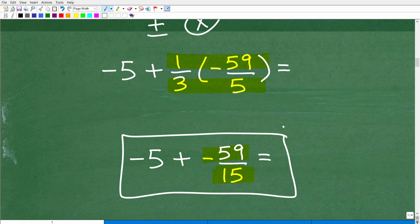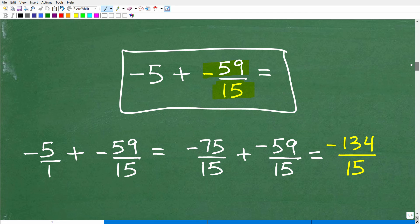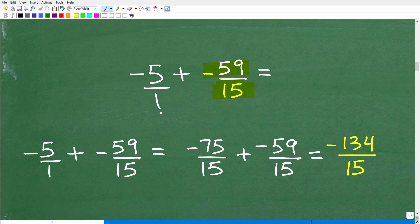So we're down to this now: -5 + (-59/15). How do we do this? Well again, we're going to think of this -5 as a fraction. So we'll put that over 1. So now this is going to be -5/1 + (-59/15). All right, so we don't have common denominators. So we're going to have to get that LCD. LCD is 15. And I'm kind of breezing through this. Again, hopefully you understand how to add and subtract fractions.